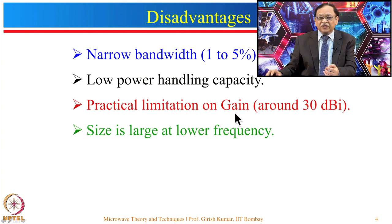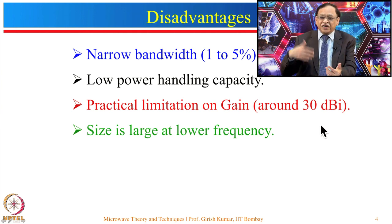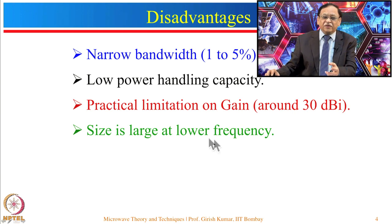There are practical limitations on gain; one can obtain a gain of around 30 dBi or so. For larger gain it is better to use a parabolic dish antenna. The size of the microstrip antenna is large at lower frequency — for example, at 100 MHz the wavelength is 3 meters, so a lambda/2 antenna would be very large. However, I will show configurations where we can reduce the size.